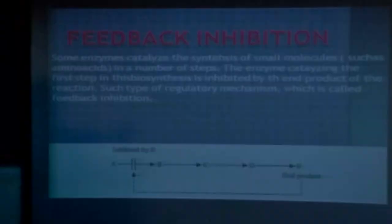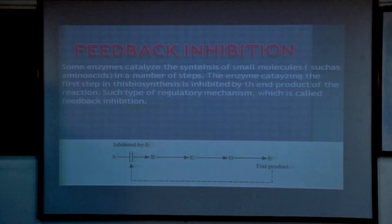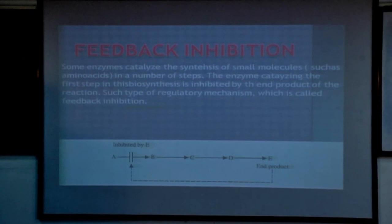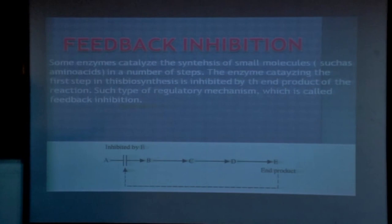This is an example of allosteric site inhibition: the end product itself, when present in excess in the body, regulates its own formation by binding to the allosteric site of the enzyme. This is feedback inhibition — when the end product is present in excess, it binds to the allosteric site of the enzyme that regulates the first step. Inhibiting this first step inhibits the entire metabolic process, minimizing further formation of the end product. The first step is called the rate-limiting step.